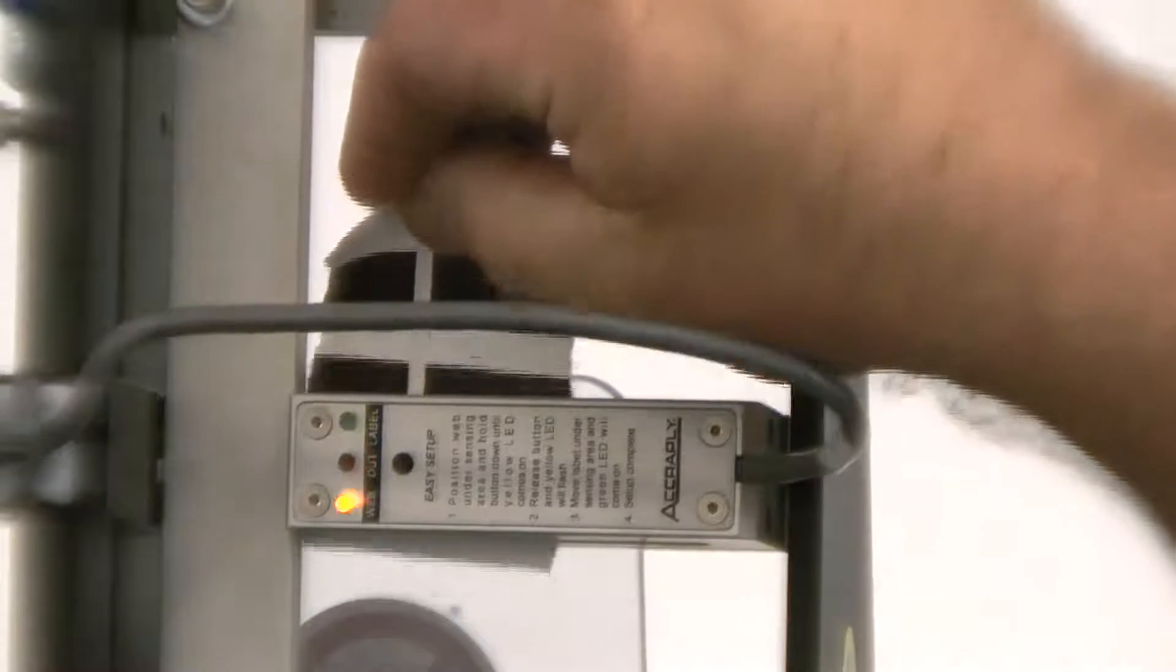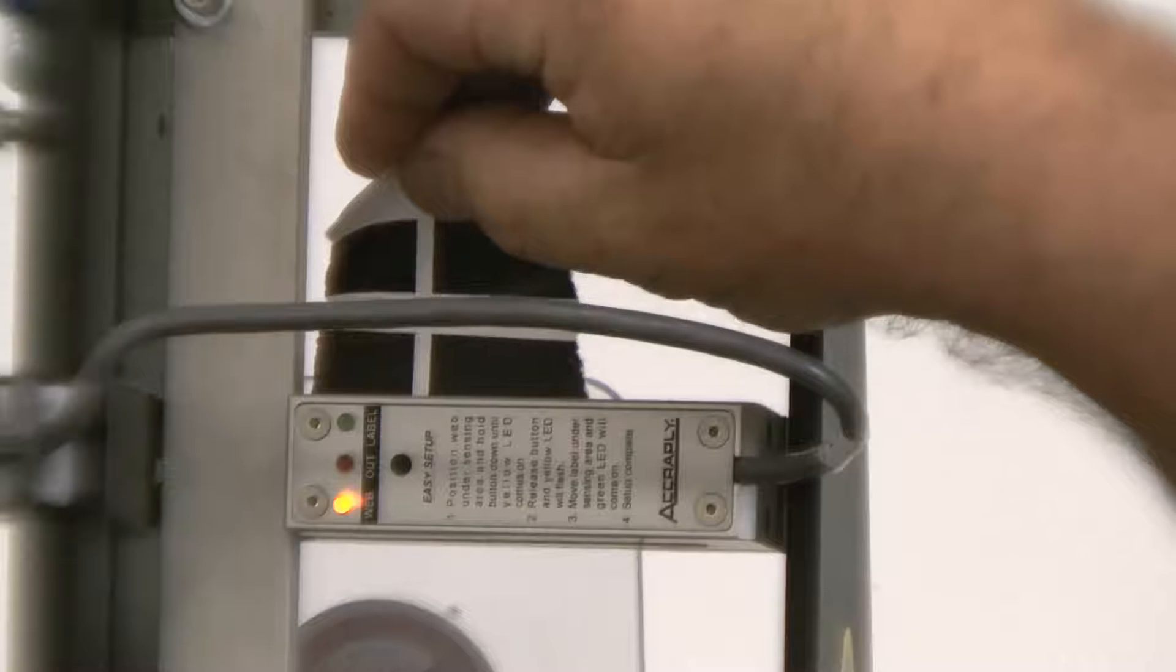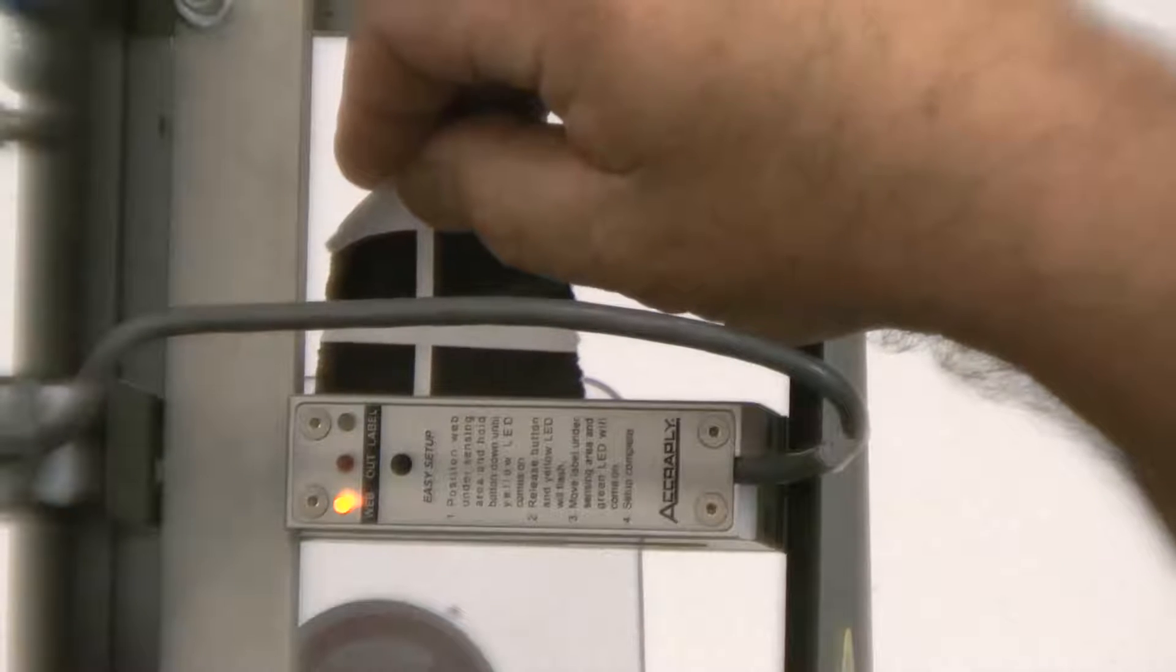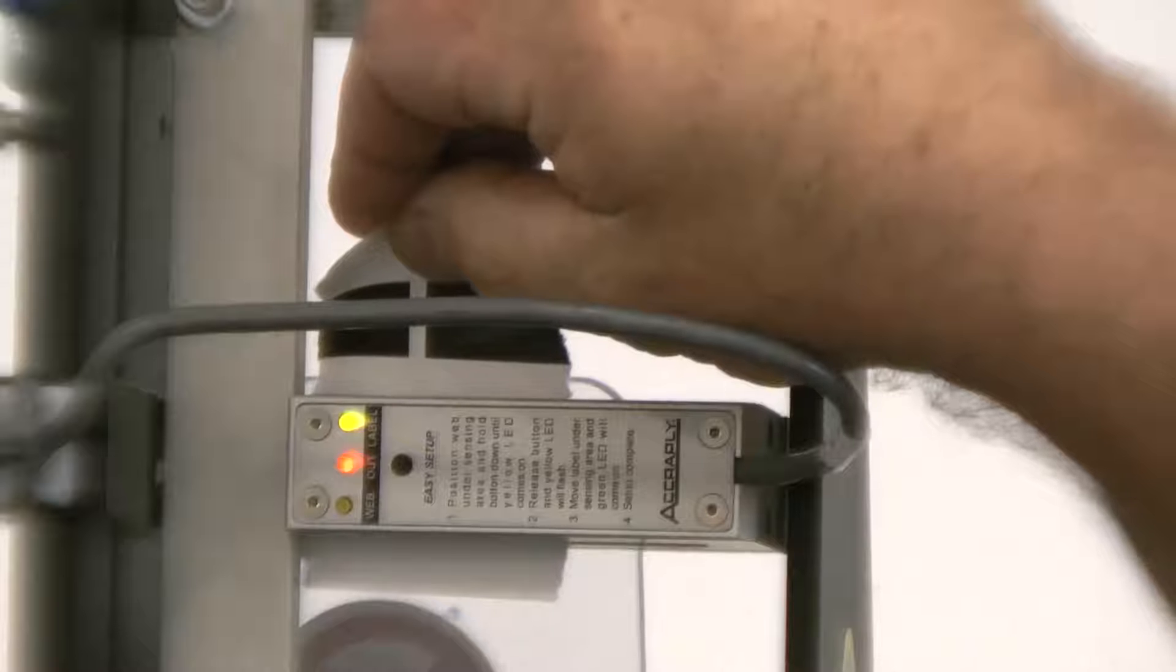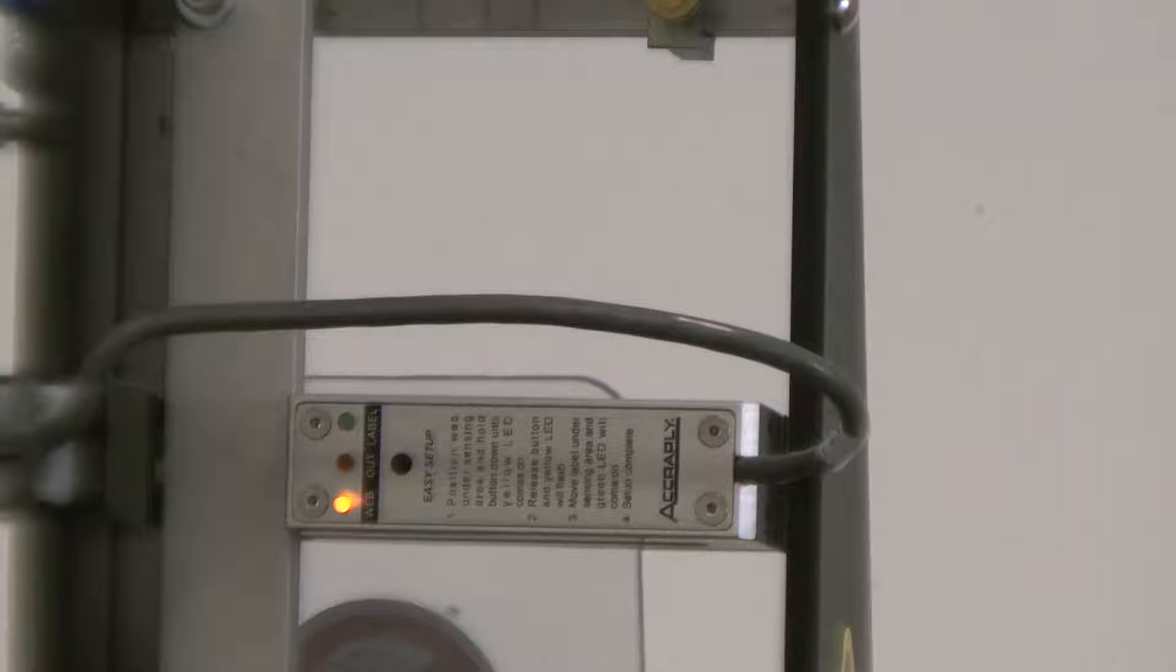By moving the web in and out of the sensor, you can see that when the white is in the sensor, the yellow light is on. When the black is in there, the green and red comes on. At this point, the sensor is properly trained and you can thread the labeler and begin running.